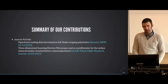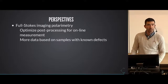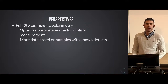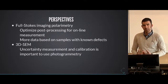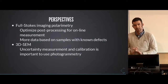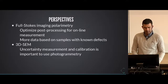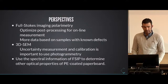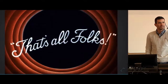Our summary of contributions is in the two articles discussed during this presentation. Looking at future perspectives, we see potential for using full Stokes imaging polarimetry in an online industrial scenario where optimization of the imaging technique is required, and also exploring samples with known defects. The scanning electron microscope as a profilometry technique requires further improvement — solving reconstruction artifacts, and borrowing ideas from photogrammetry for uncertainty assessment and calibration. Finally, something we have not yet explored is the use of spectral information for full Stokes imaging polarimetry in relation to other optical properties of the material.